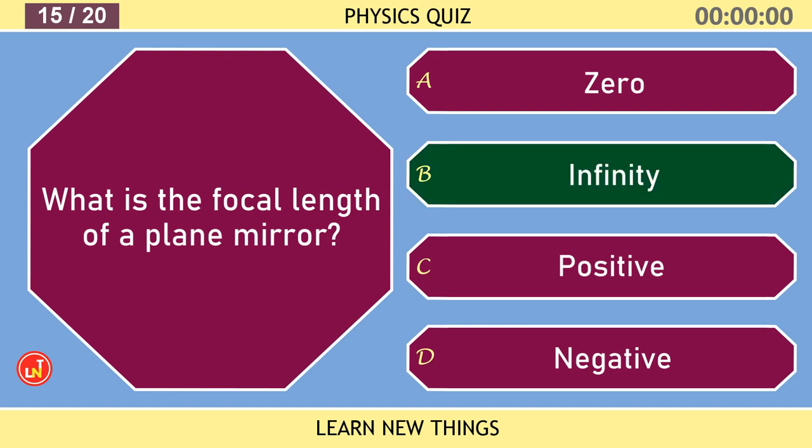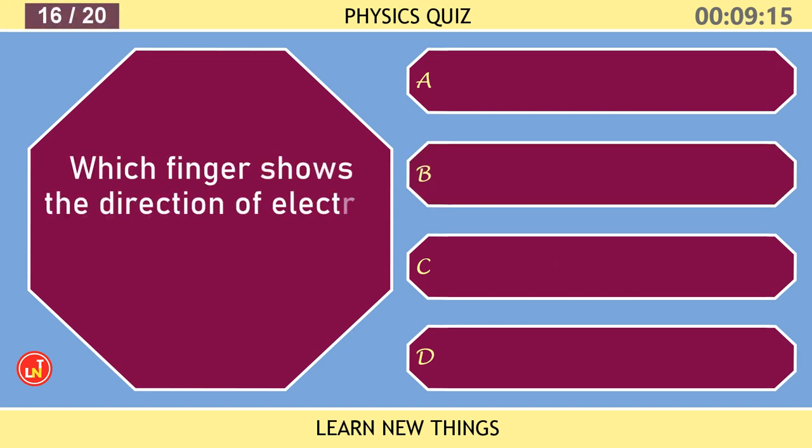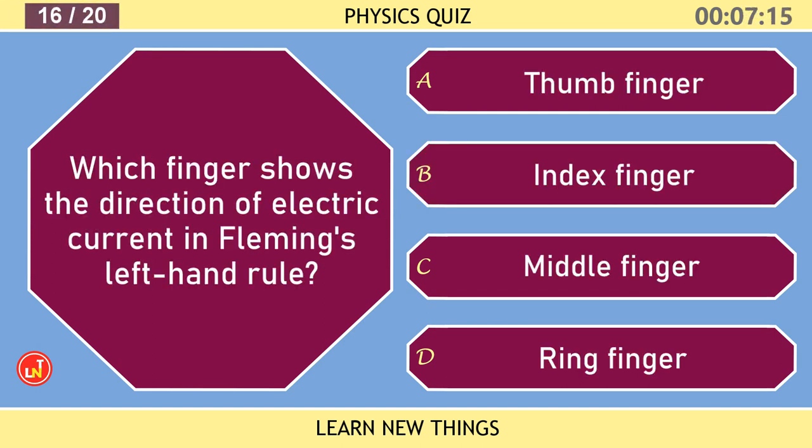What is the focal length of a plane mirror? Infinity. In Fleming's left hand rule, the middle finger represents current.